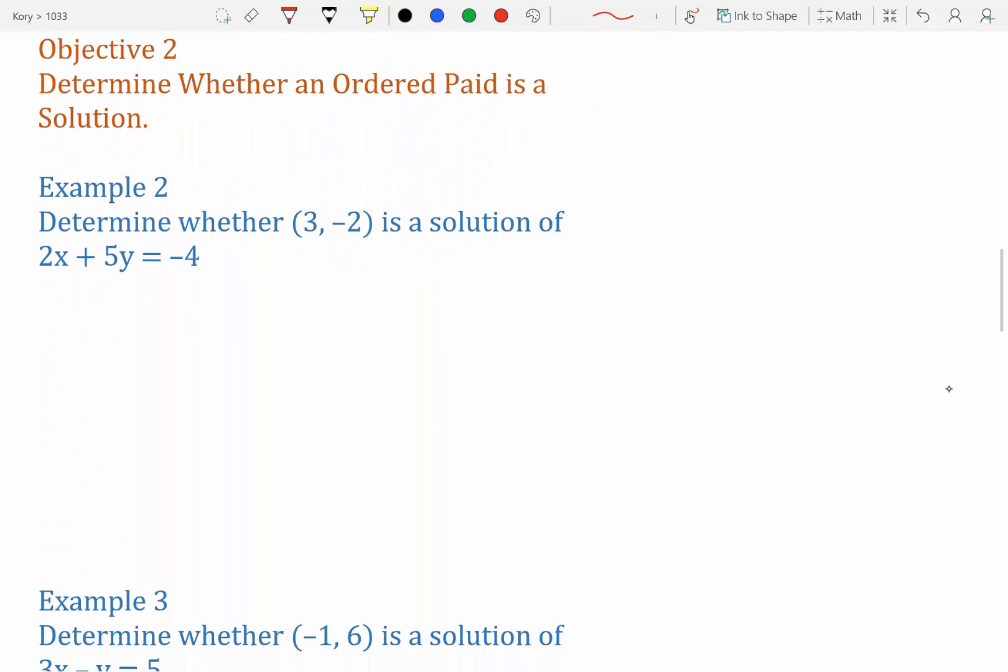Objective 2. Determine whether an ordered pair is a solution. So we want to determine whether 3, negative 2 is the solution to 2x plus 5y equals negative 4. We're going to plug these in.